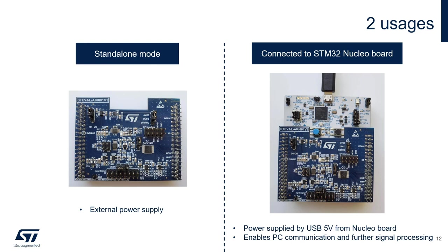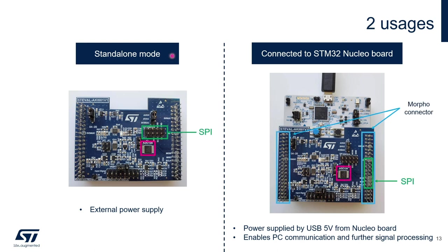The evaluation board can be used in two ways. First, in standalone mode, where you need to provide an external power supply. Second, connected to an STM32 Nucleo board, where it is powered by USB 5V from the Nucleo board — this USB connection enables PC communication and further signal processing. In standalone mode, the SPI interface connector is here. When attached to the Nucleo board, the SPI interface is directly connected to the STM32 microcontroller through the Morpho connector.